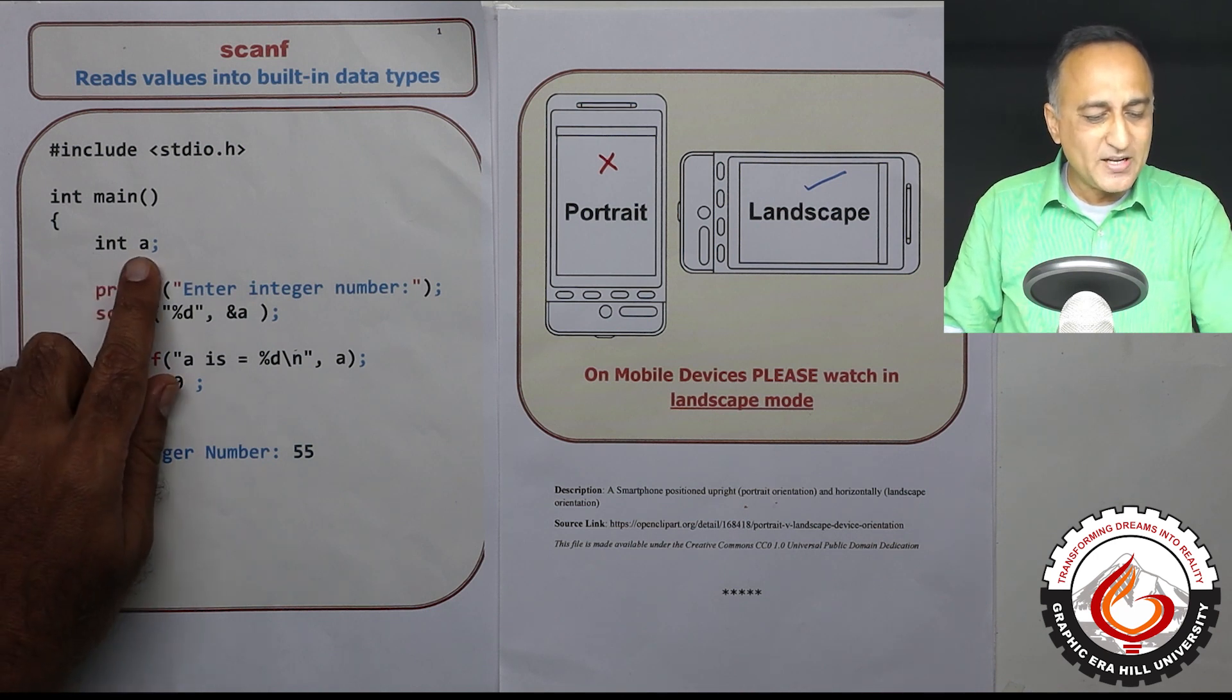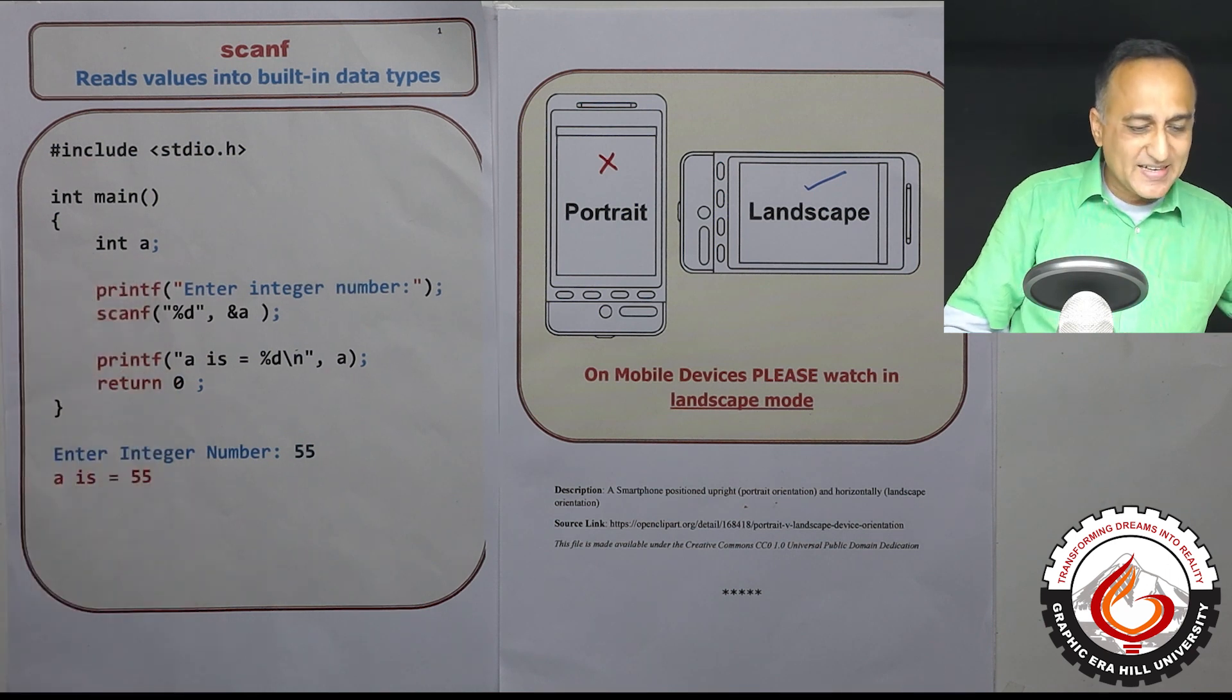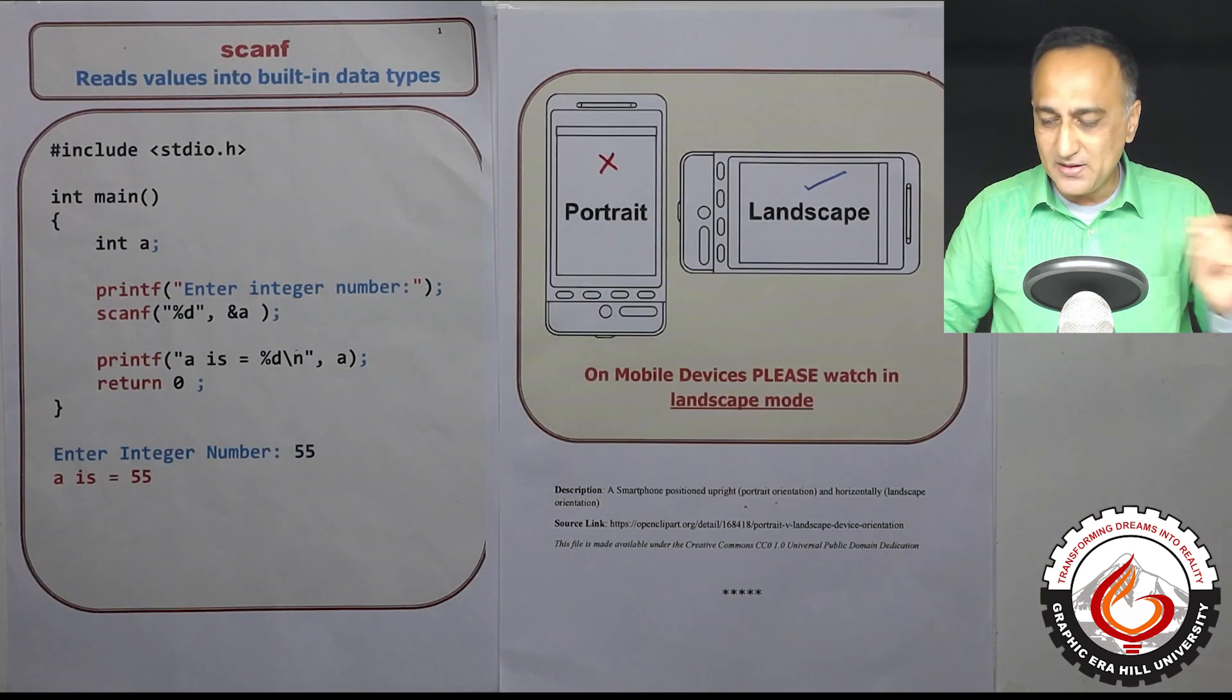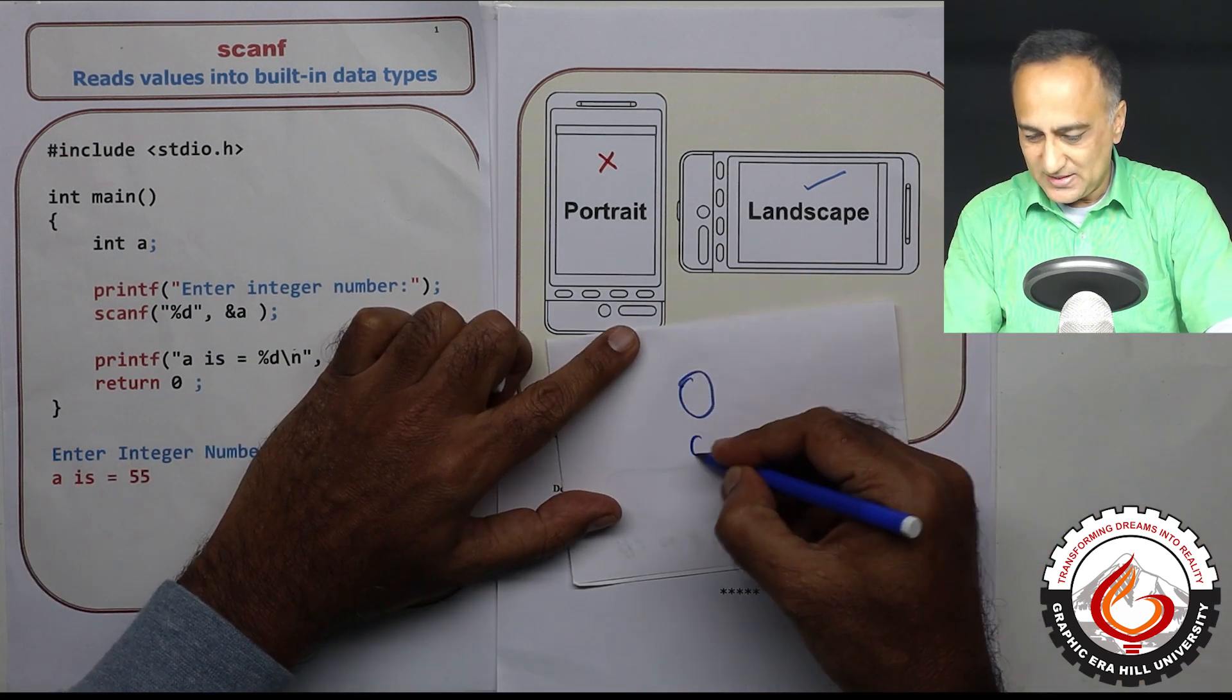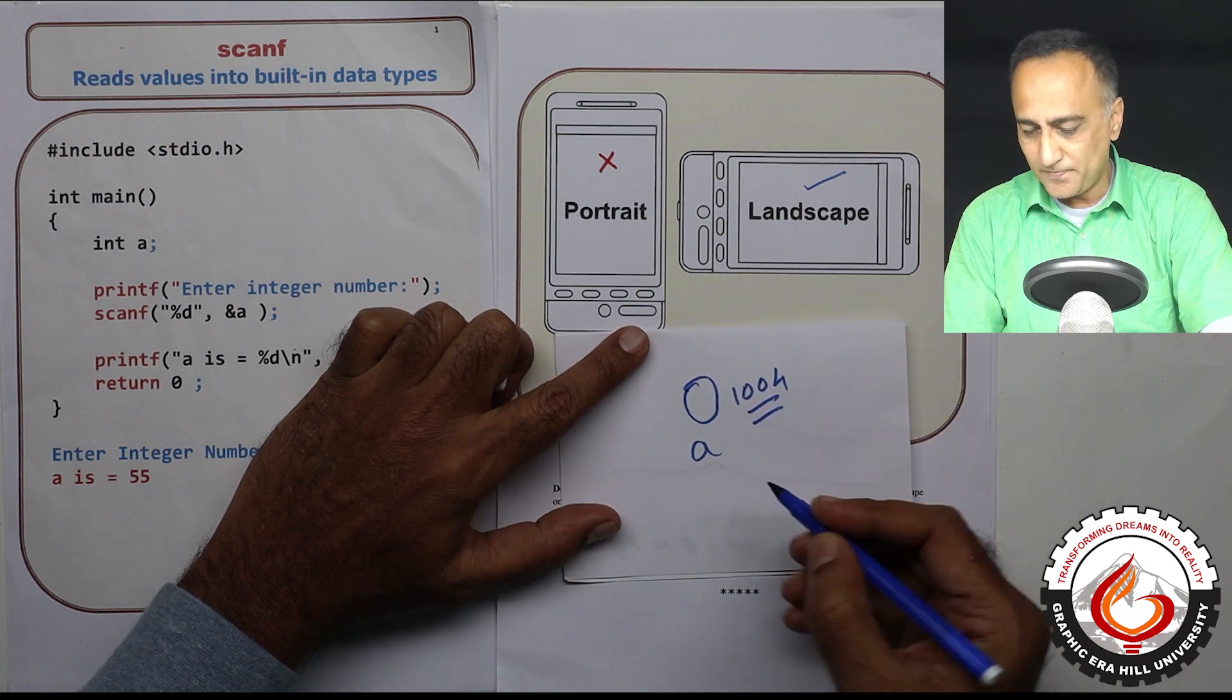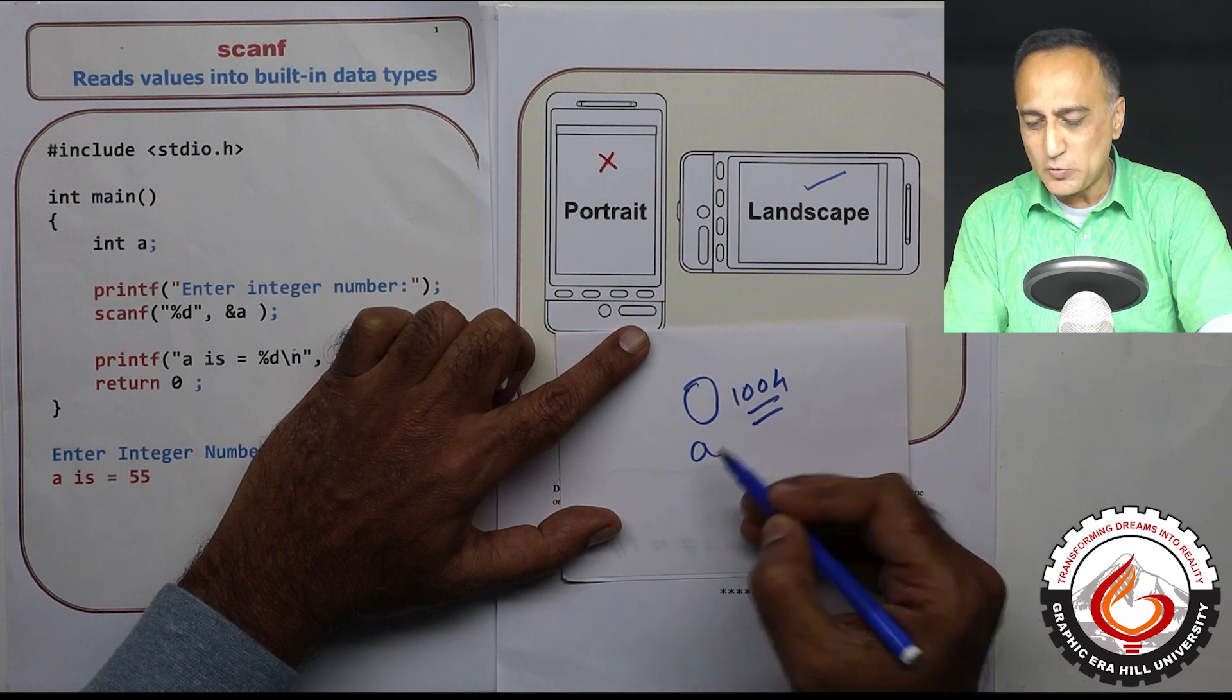I have declared a variable a of the type integer. It indicates that a can reside in any memory location given by the operating system at that point of execution. So let us say this is a and it exists at address 1004. So a has two things. The address 1004 is referred to by the name a.